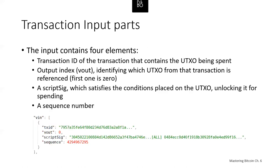Here's an example of an input where Alice is sending her payment to Bob. We see the transaction ID, the Vout specifying which output from that transaction ID — since it's zero, referring to the first output — then a script sig showing how she's going to unlock it, and a sequence number. There is only one input in this list, with the transaction ID, output index, script sig, and sequence number.